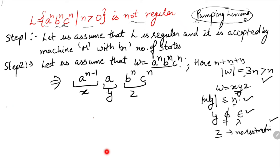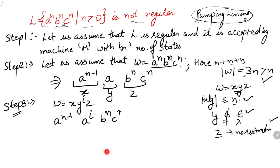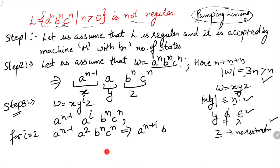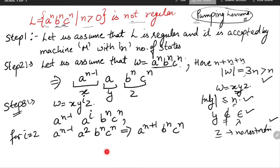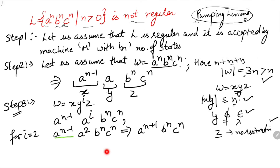Step 3: we write w equals x y raised to the power i z. It becomes a raised to the power n minus 1, a raised to the power i, b^n, c^n. For i equals 2, the string becomes a^(n-1) concatenated with a^2, b^n, c^n. Since the base is the same we add the exponents: n minus 1 plus 2 gives a raised to the power n plus 1, b raised to the power n, c raised to the power n.